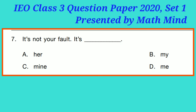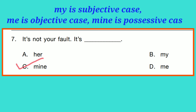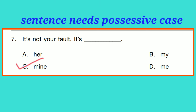Question 7: 'It is not your fault. It is dash.' Option C is correct: 'It is mine.' Mine is the possessive case of the pronoun. 'My' is the subjective case, 'me' is the objective case, and 'mine' is the possessive case. The sentence needs the possessive case — 'Galti meri hai.'